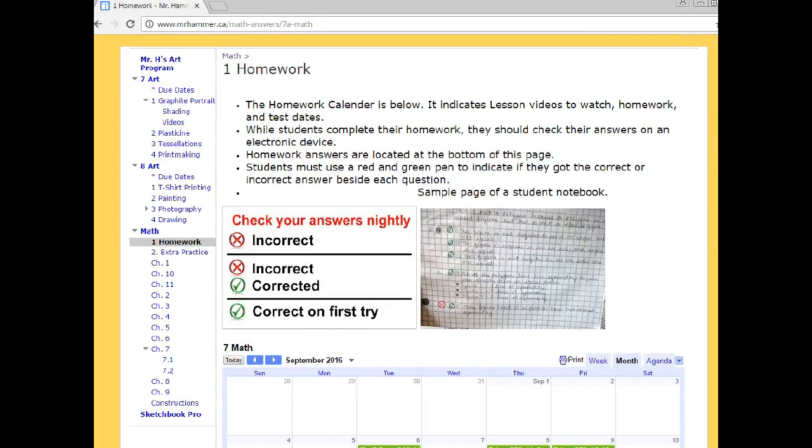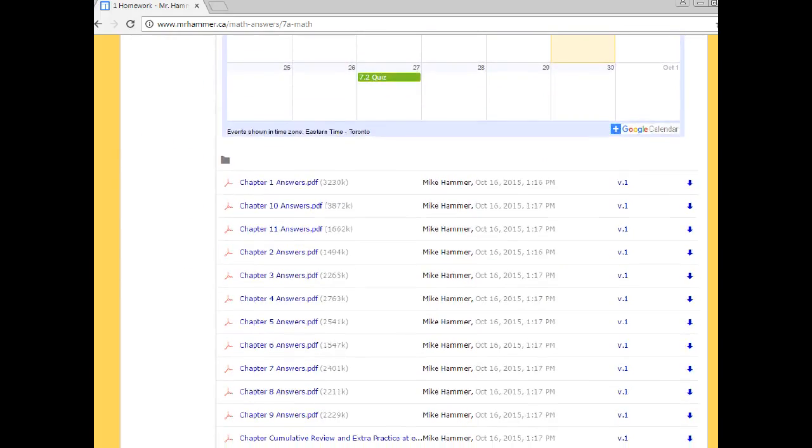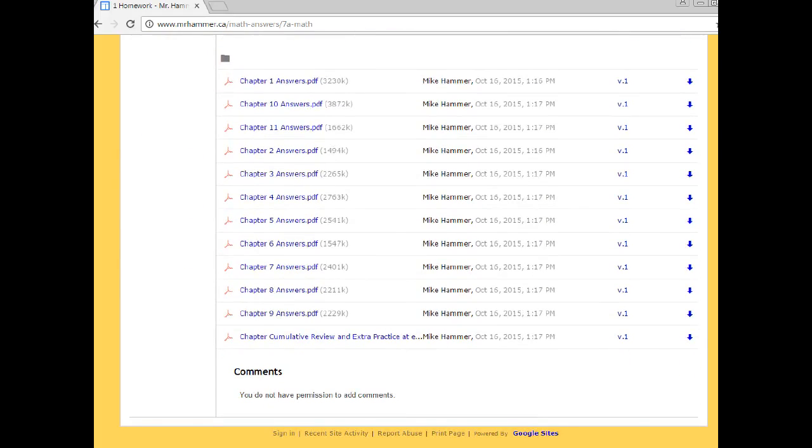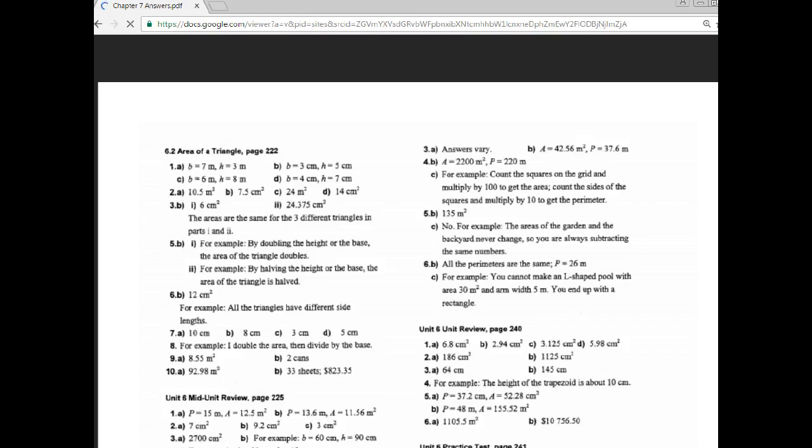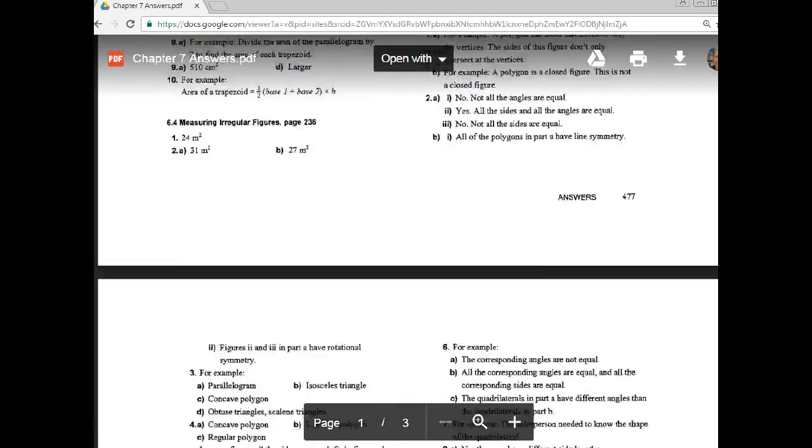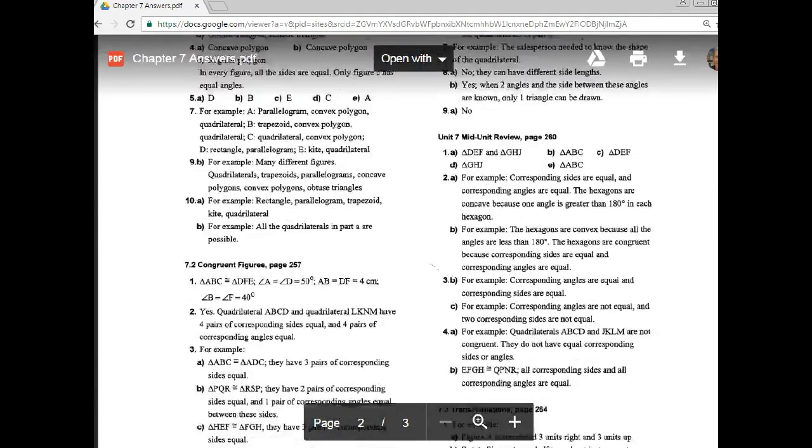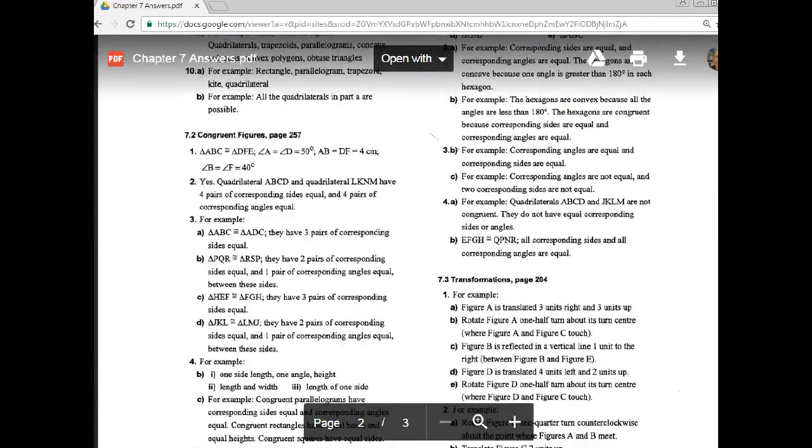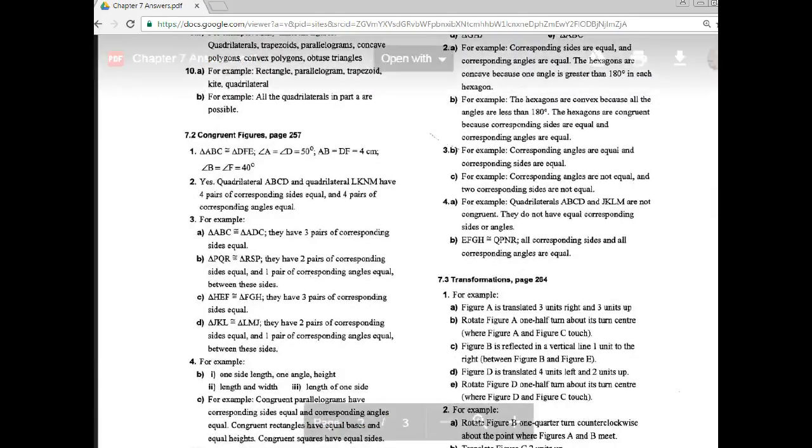And here's an example of student work and what it would look like in their notebook. They complete every question in their notebook, and as they are working, they have a PDF file open which has the homework answers on it. For example, we're going to scroll down on the homework page and find chapter7answers.pdf. Students would have this file open while they were working. They would scroll down to the appropriate section, let's say 7.2, and they would look at the answer and see if they got their answer right or wrong.